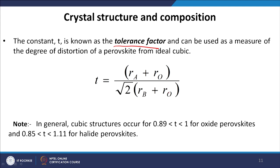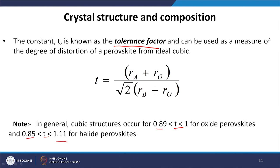These distortions are quantitatively represented by the tolerance factor: t = (Ra + Ro) / (√2 × (Rb + Ro)). In general, a cubic structure occurs for values of t between 0.89 and 1, and for oxide perovskites the t value is between 0.85 to 1.11 for halide perovskites. Here Ra is the radius of the A cation, Rb is the radius of the B cation, and Ro is the radius of the anion. Once we fabricate a perovskite structure, we check the tolerance factor to ensure the required perovskite structure is obtained.